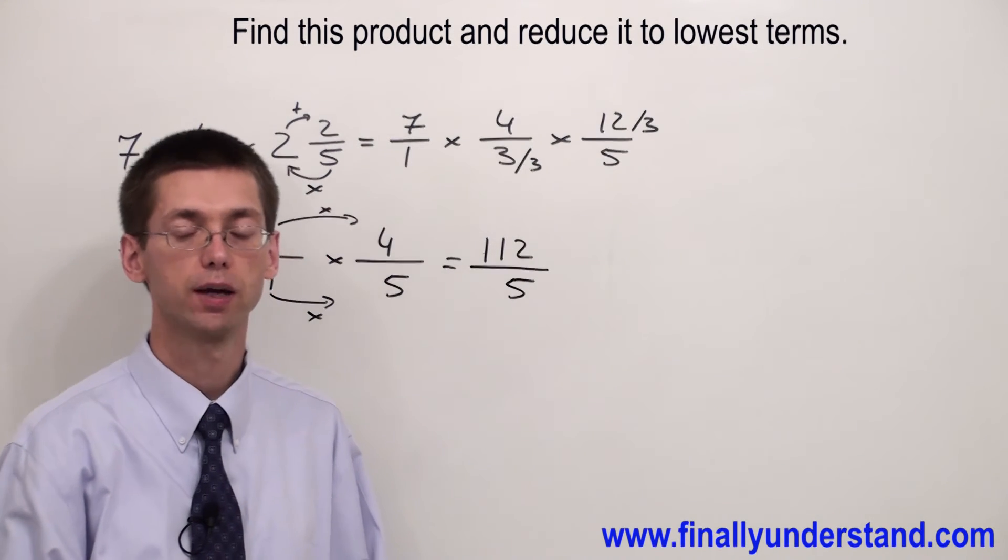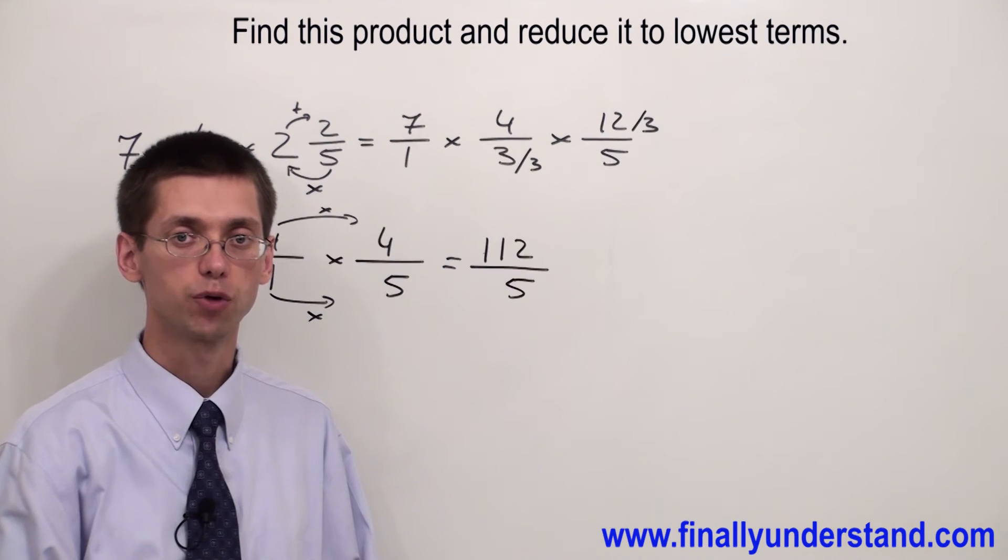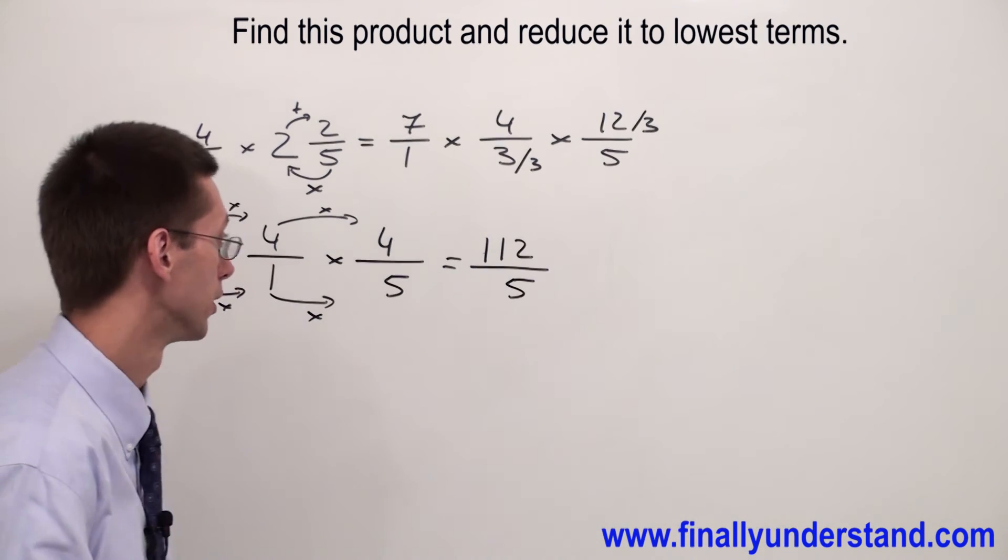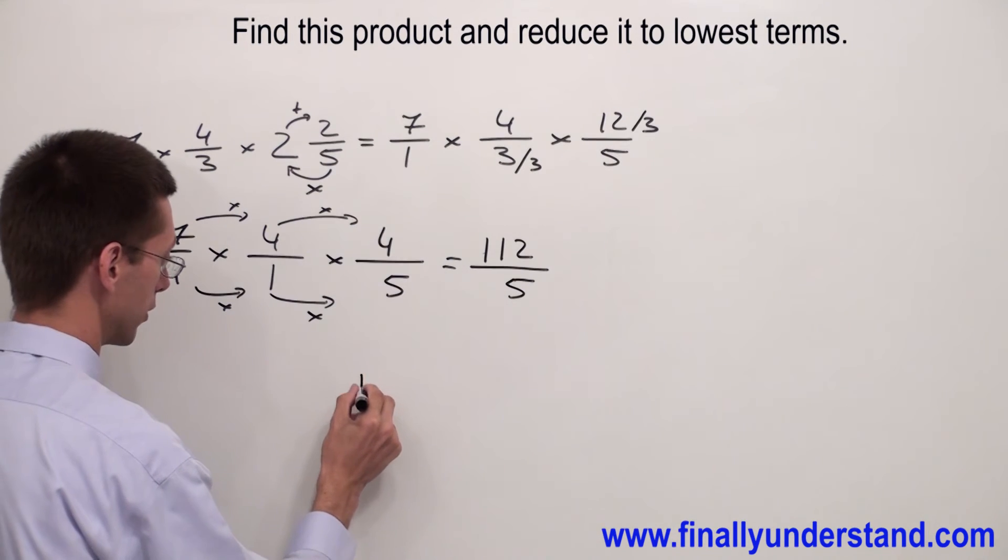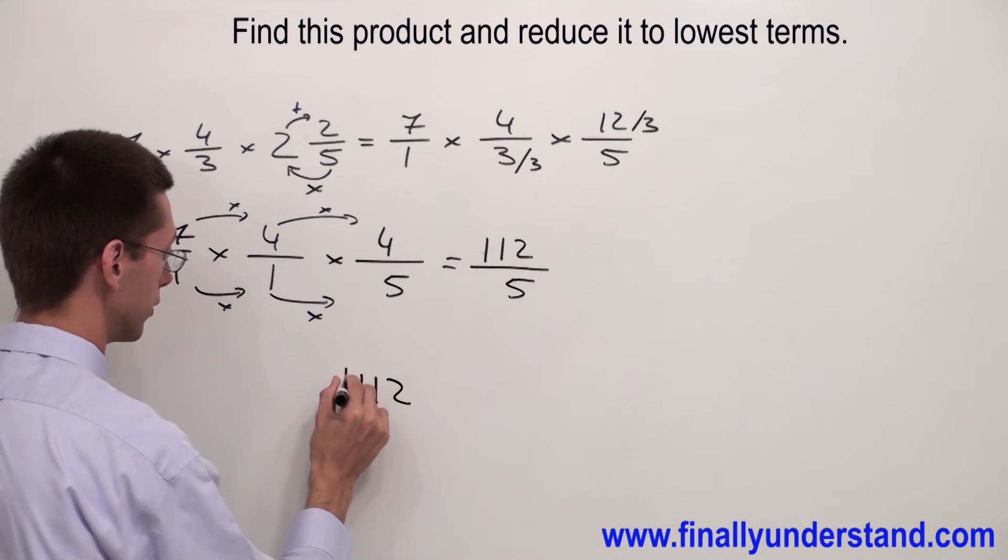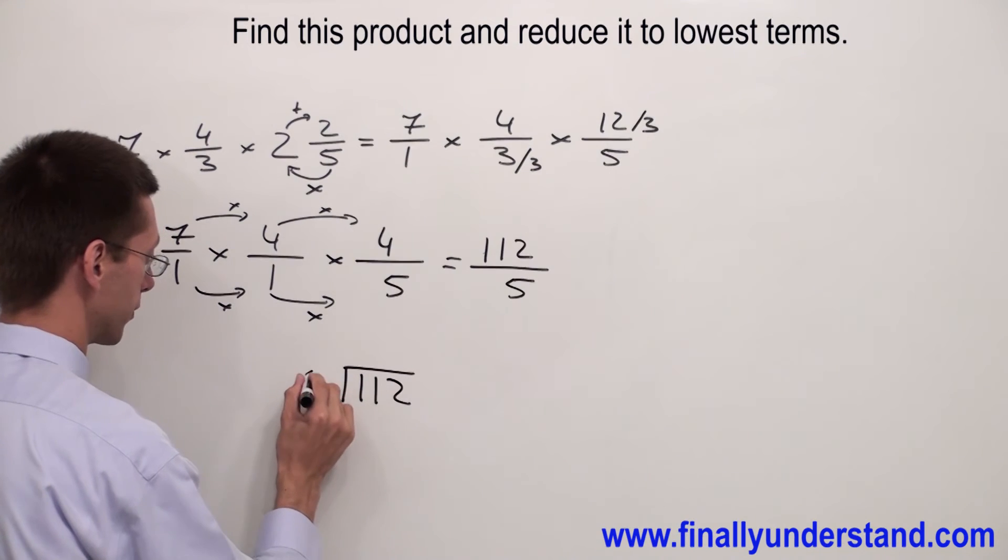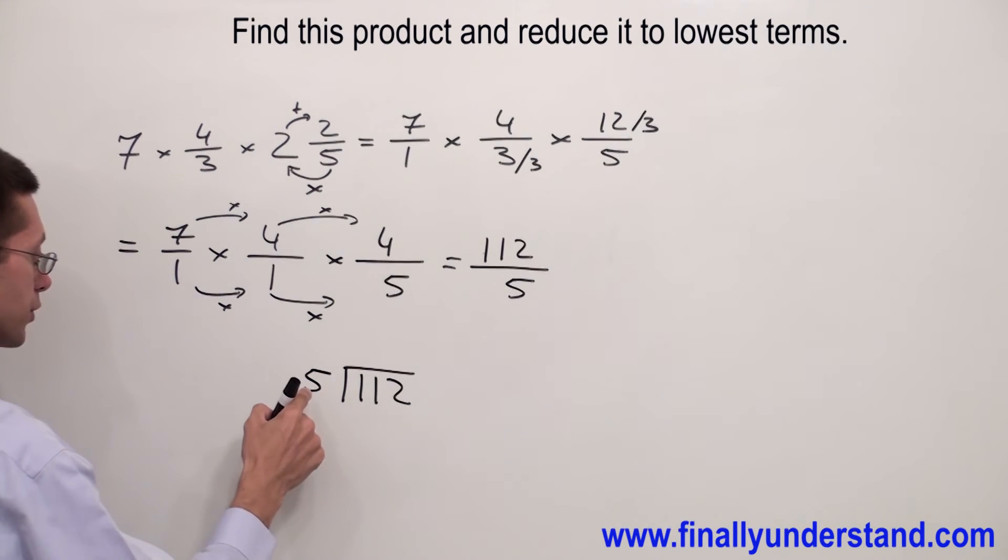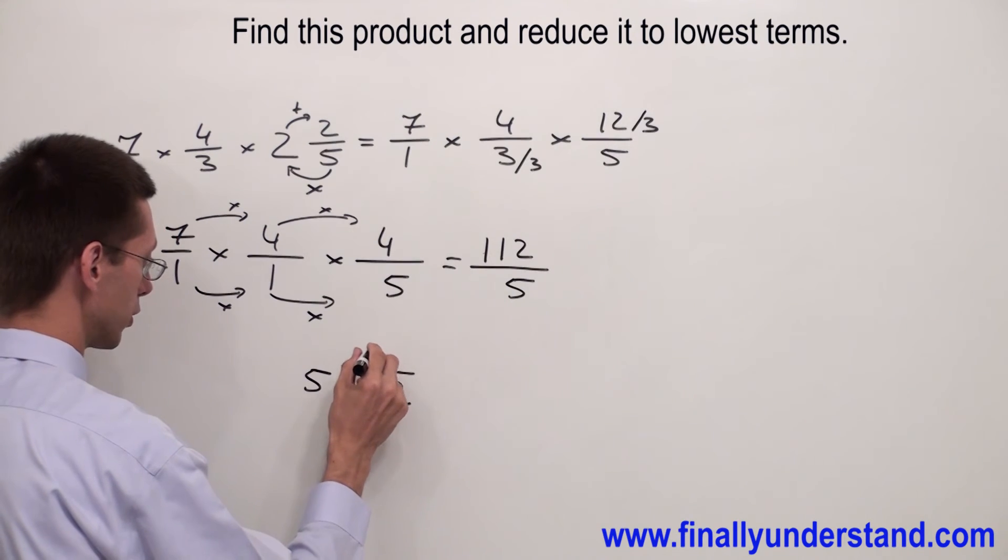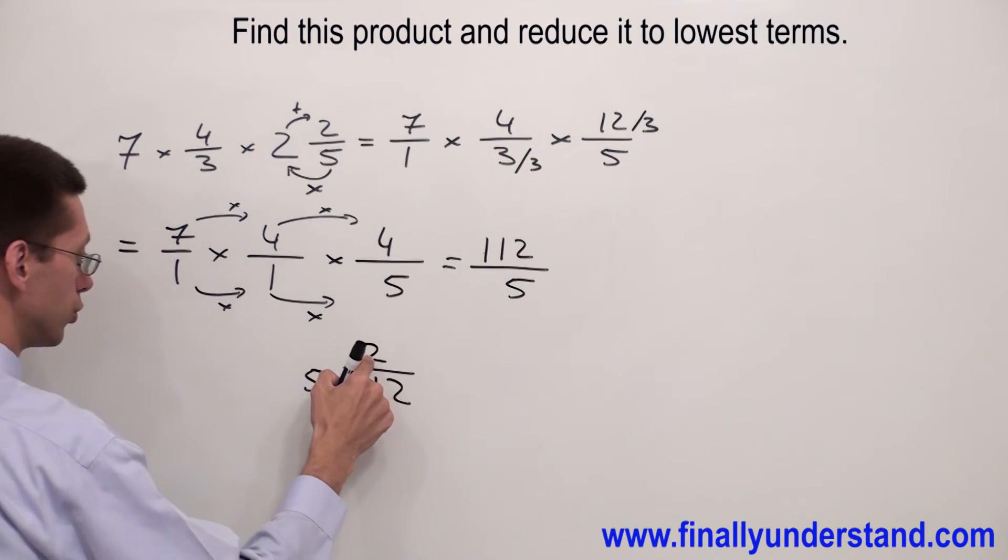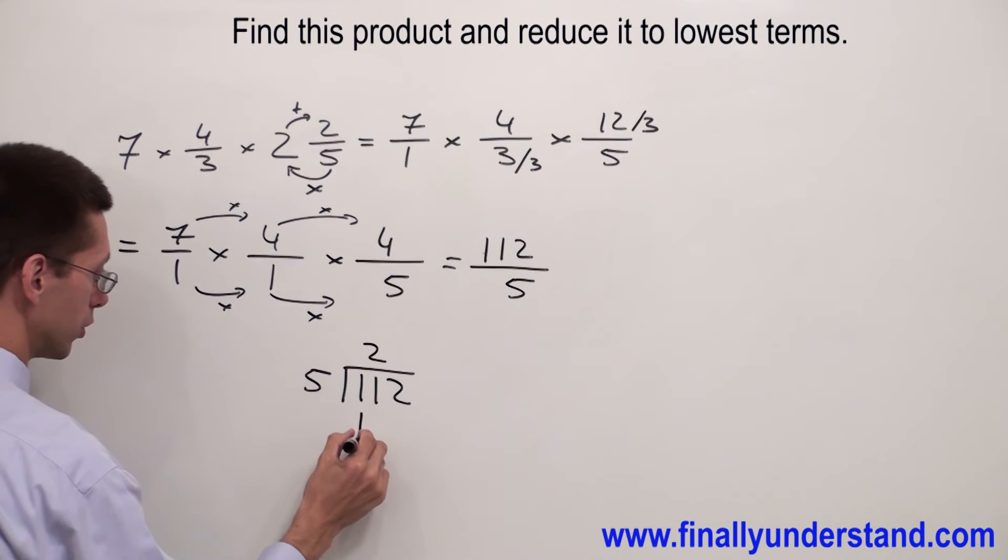This is the example of the improper fraction. Most of the time we convert improper fractions to the mixed number by dividing numerator by the denominator. So I have 112, I have to divide by 5. The question is how many times 5 goes into 11? It goes 2 times. 2 times 5 is equal 10.